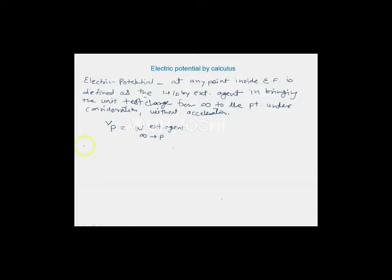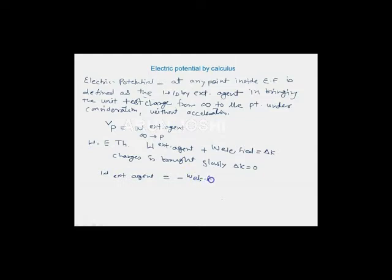Now, only if you recall the work energy theorem, what you say: work done by the external agent plus work done by the electric field should be equal to change in kinetic energy, delta K. And you say you are bringing the charges very slow, charges is brought slowly. So delta K equal to 0. It means you can say work done by the external agent is equal to negative of the work done by the electric field. Is it clear why negative is coming?